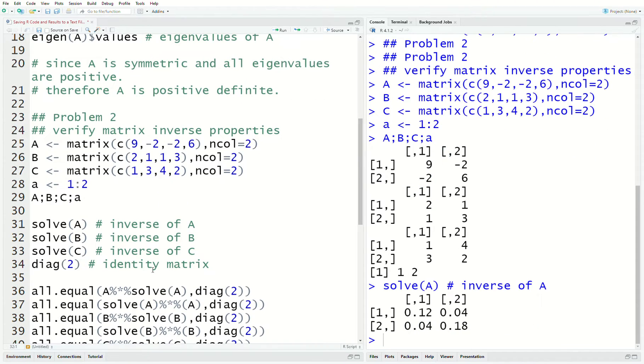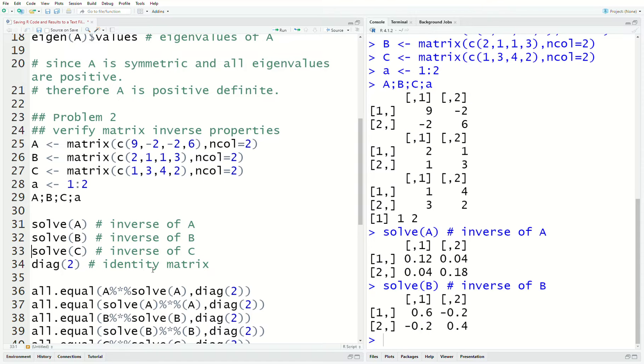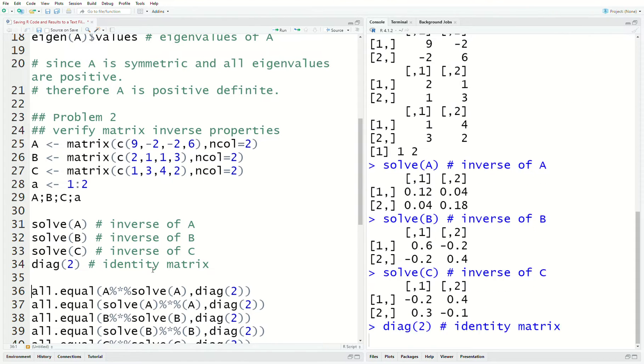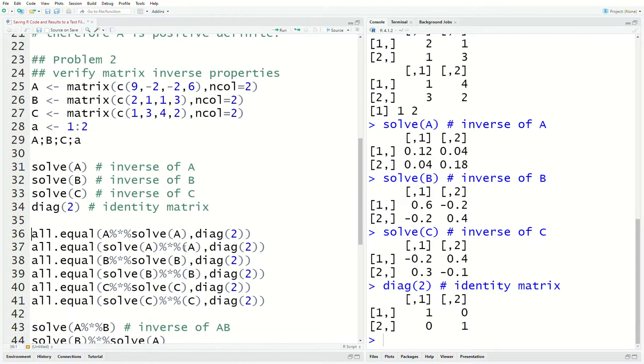And then we can solve for A. So, that's A inverse, B inverse, C inverse. This is the identity matrix. Now, I use some all equal signs, A, A transpose. Remember, the solve is how you do it, transpose, inverse. The solve is an inverse function in R.